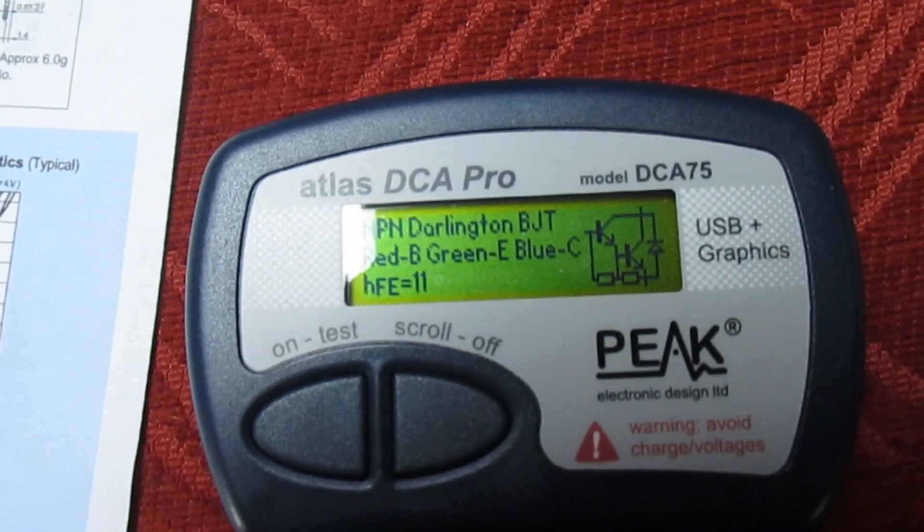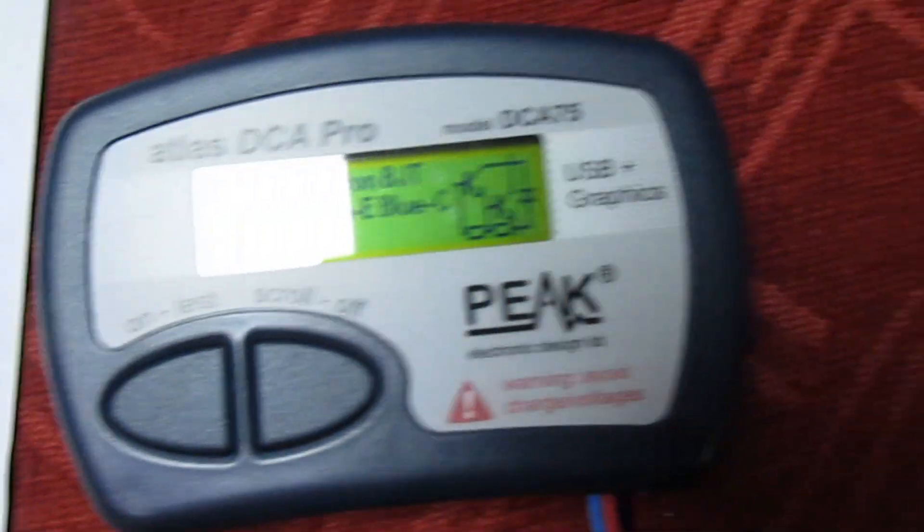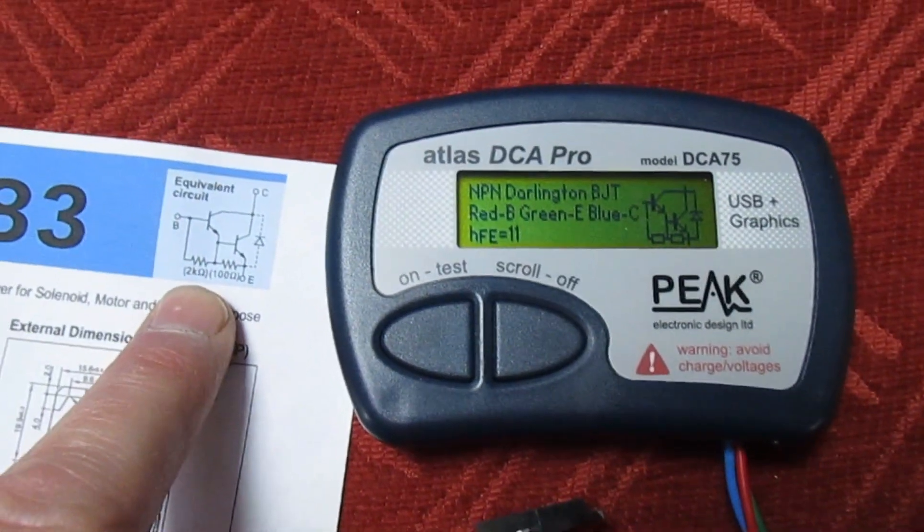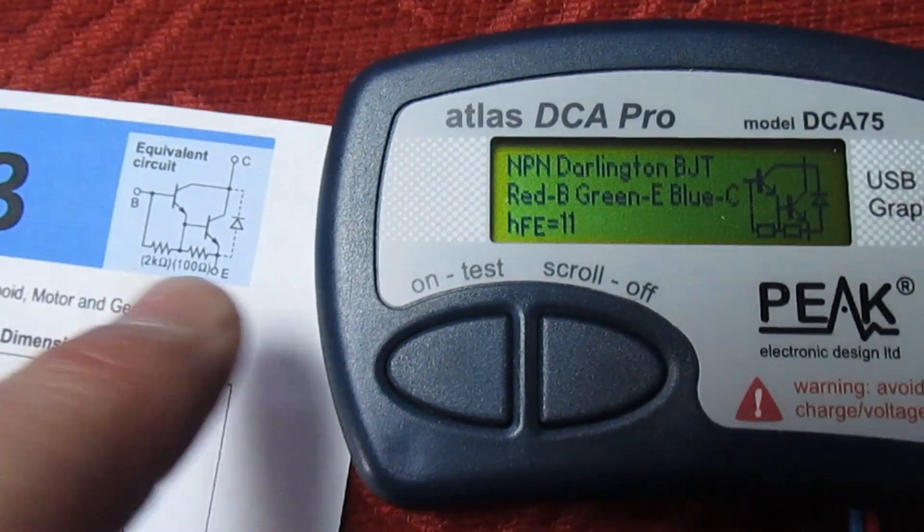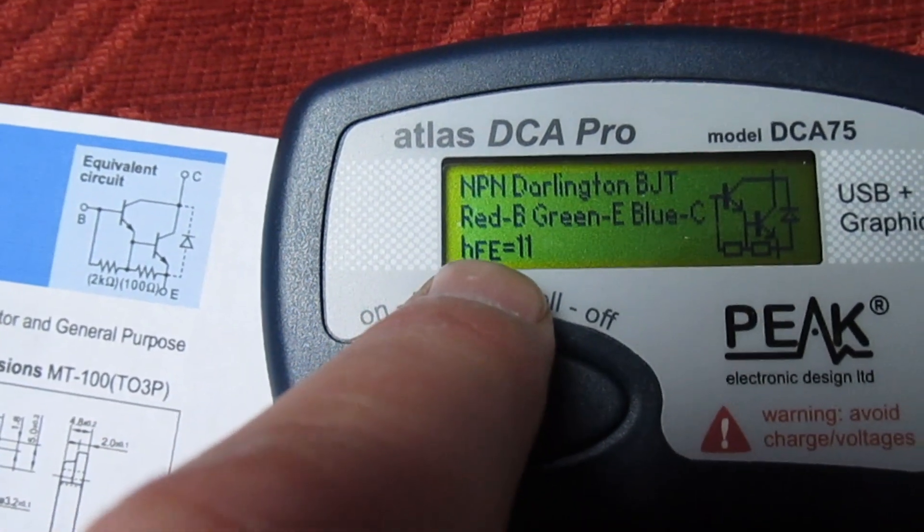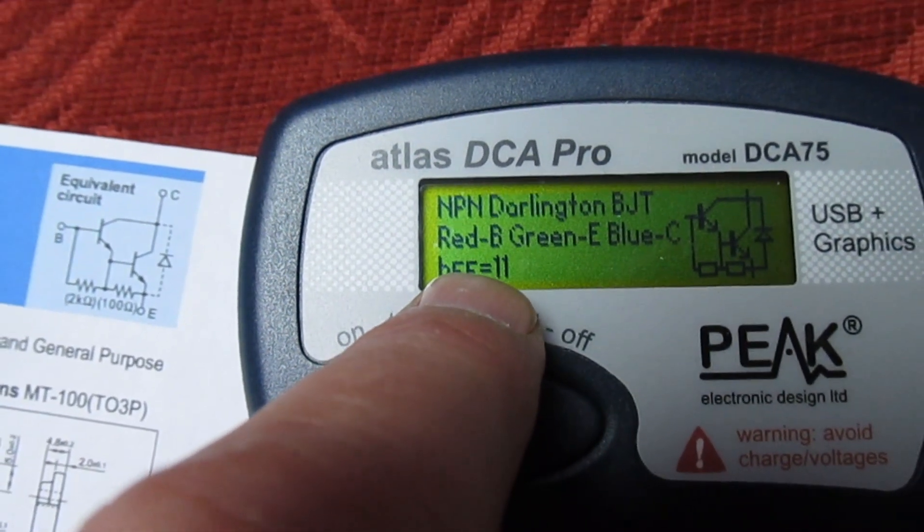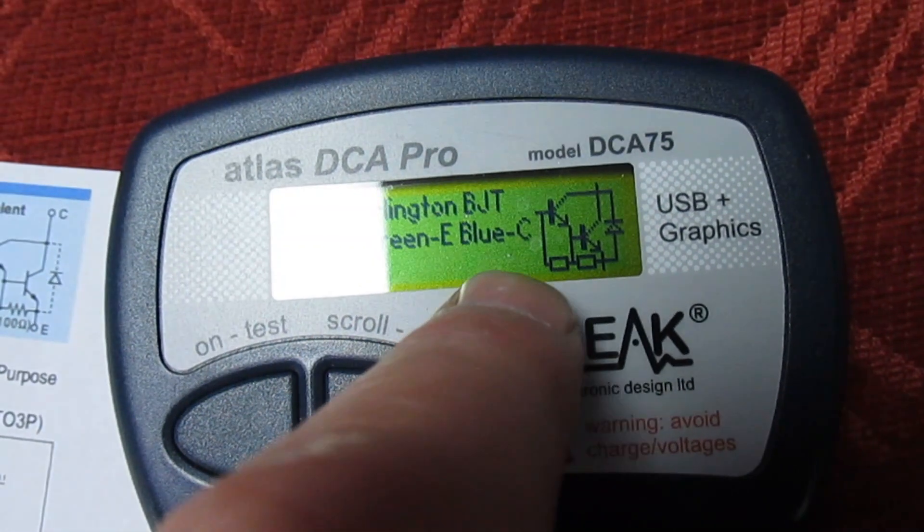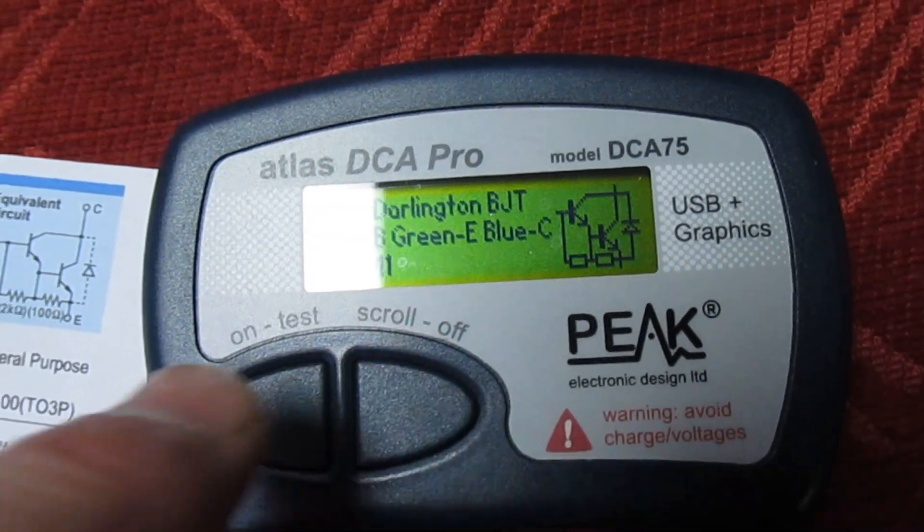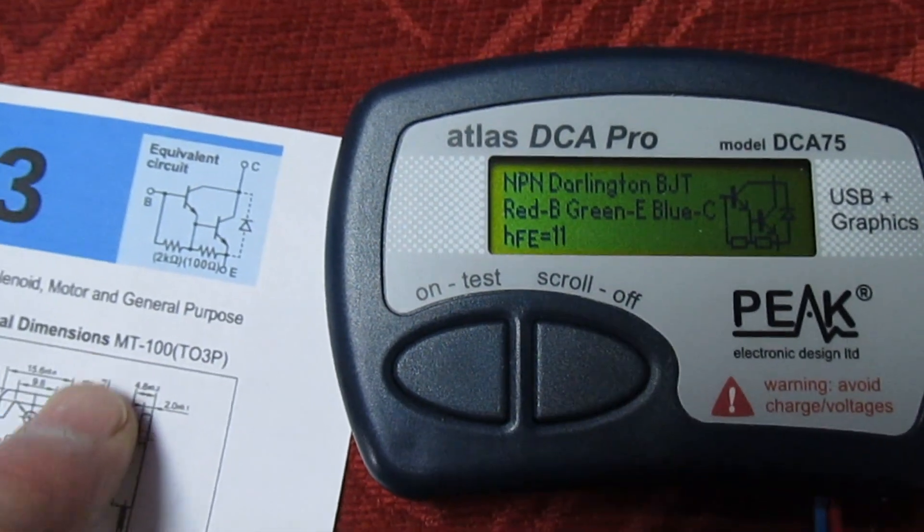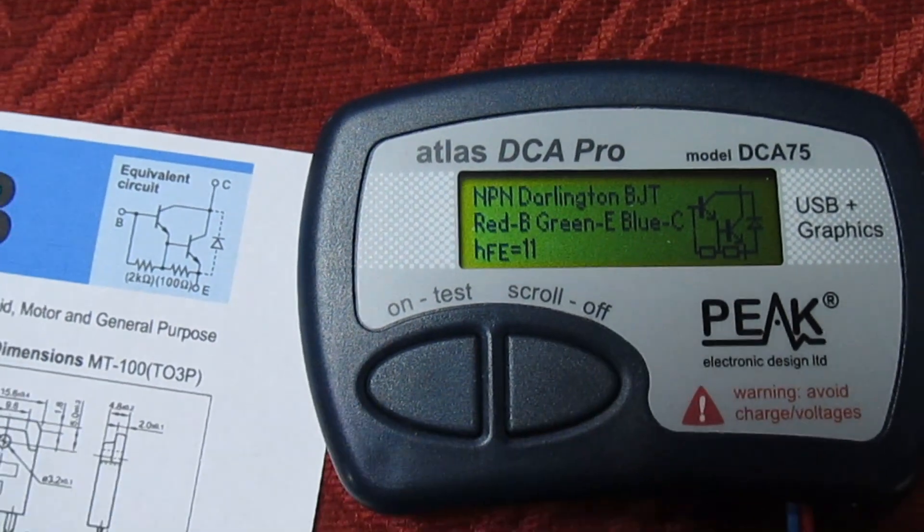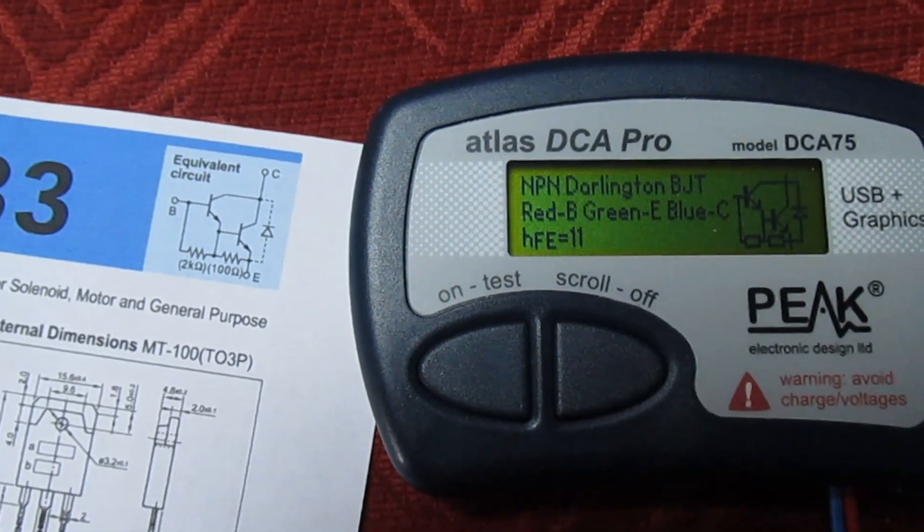It is a bit smaller, this display. I'll plug this into my computer and we'll make it a bit bigger. As you can see it's come up with the correct picture there. Take no notice of the gain figure. The reason it's reading 11, I presume, is because it's got internal resistors and it's fooled the Peak tester. This should have a gain of a few thousand.